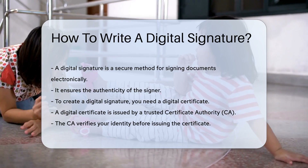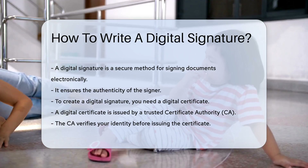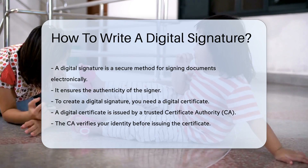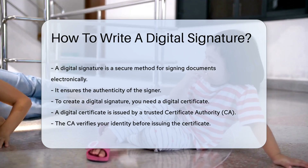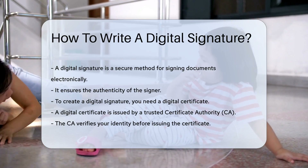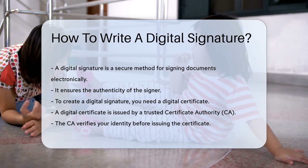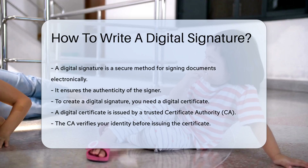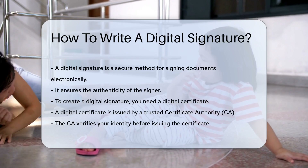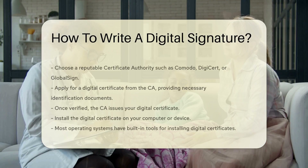The CA verifies your identity before issuing the certificate. First, choose a reputable certificate authority. Examples include Comodo, DigiCert, and GlobalSign.